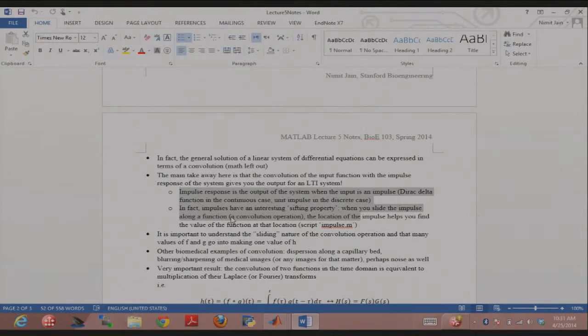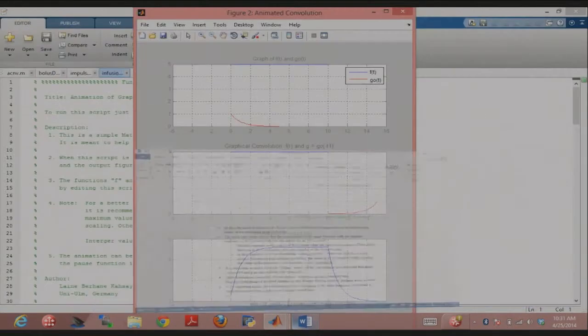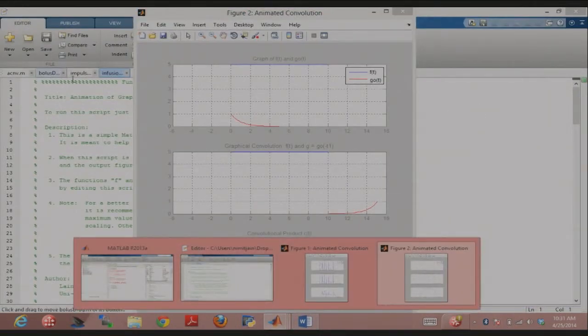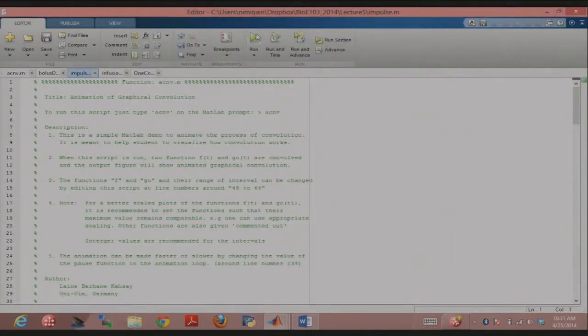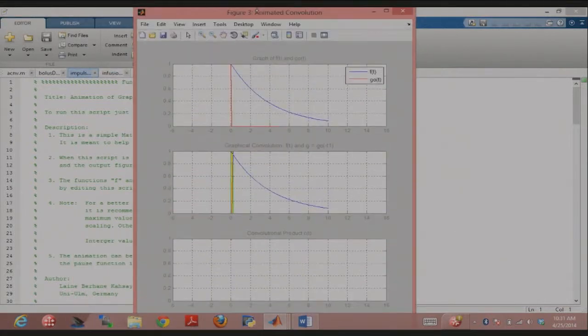It's called the sifting property of impulses, and it's a very useful property. The idea is that the location of the impulse, when you're sliding it across, gives you the value of the function at that location. In animation form, this becomes mathematically very useful.